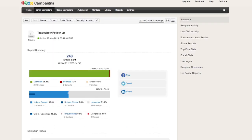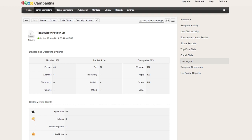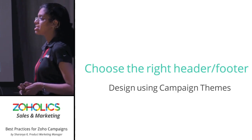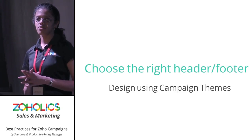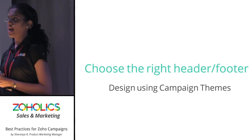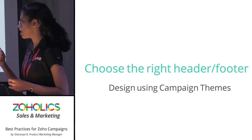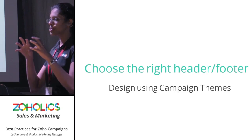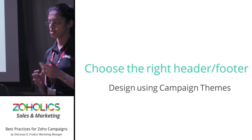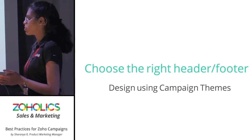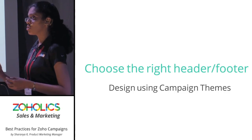Another thing to keep checking is your reports — look at the user agent statistics to see if mobile usage is increasing with every campaign. You will definitely see an upward trend, which is one reason to use pre-designed responsive templates. Moving on to header and footer links: you need to make sure you have the proper links in your template, like an unsubscribe link — one of the most important links — and a 'view in browser' link in the header, so recipients can view the email in a browser if their email client doesn't display it properly.